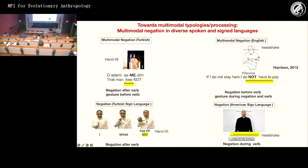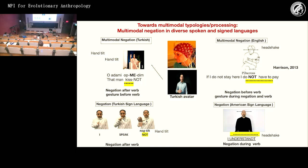I would like to claim that gestures in the spoken language system of negation are part of grammatical structures. To prove this, we are doing EEG studies where people see a negation gesture with the negation morpheme, to see if the brain processes the gesture and the word in the same way. We are using avatars for this.